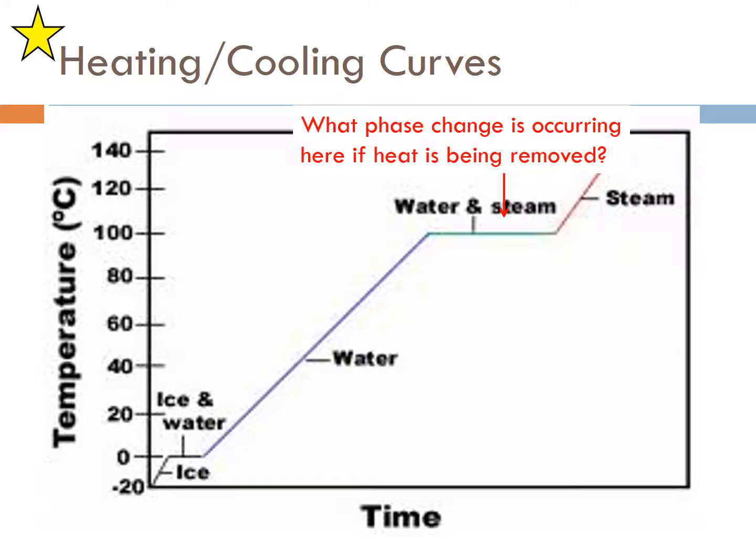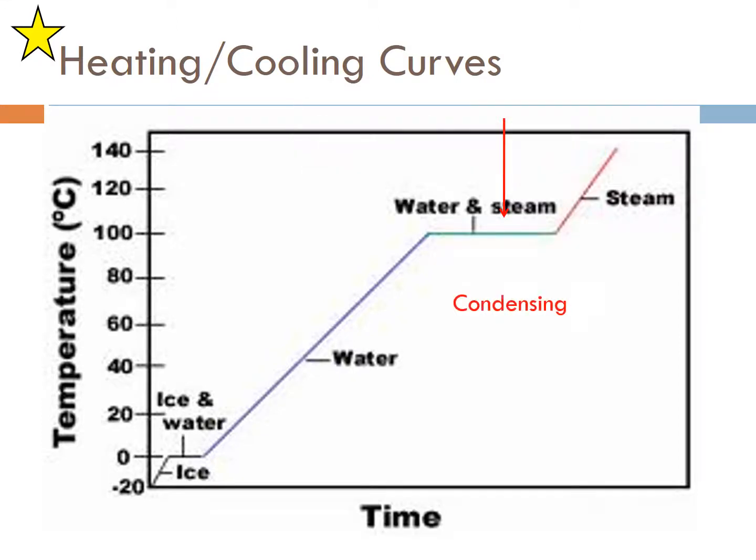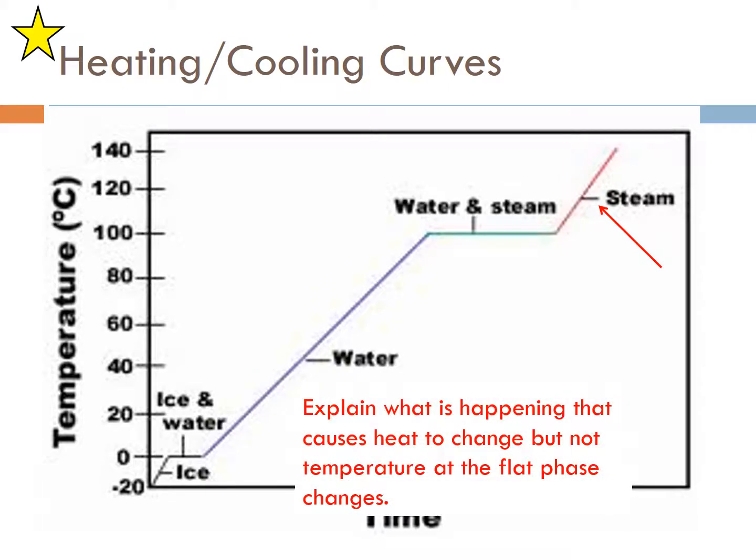Once water reaches 100 degrees you have another phase change into steam. What phase change is occurring here if heat is being removed? So removed means it's getting colder, so from steam to liquid it is condensing. Once you hit above, all the liquid water is into steam, you go above 100 degrees and you have steam.